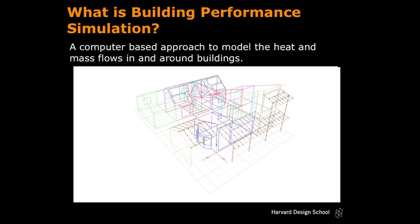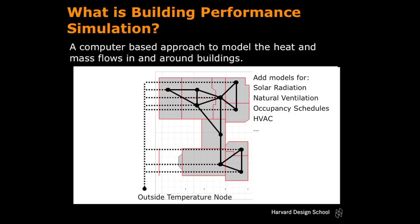When you want to model a building like this in the computer, you abstract the building. You say: I have a building that consists of different thermal zones, and each zone is represented as a node. You then have this nodal network that's automatically set up by a computer that defines the relationship between the rooms and the outside. You add components for occupant behavior, solar radiation, and so forth — and there you have your thermal simulation program.